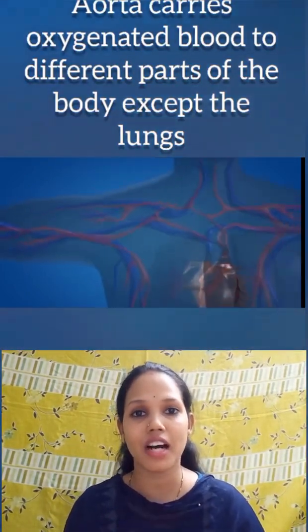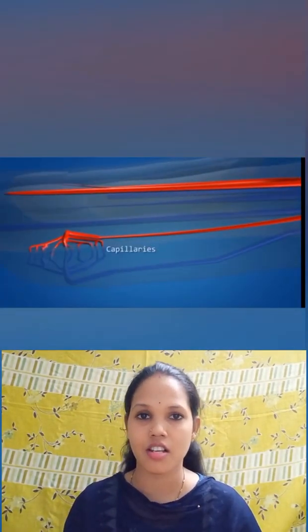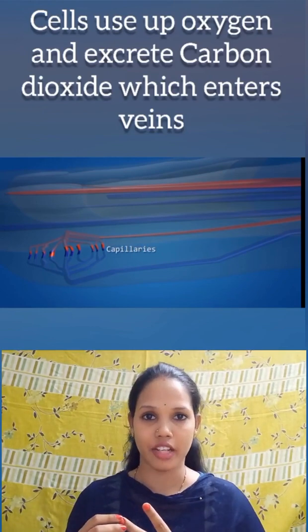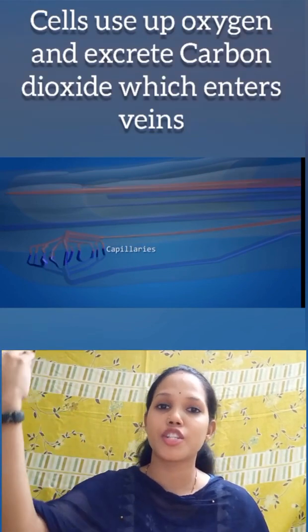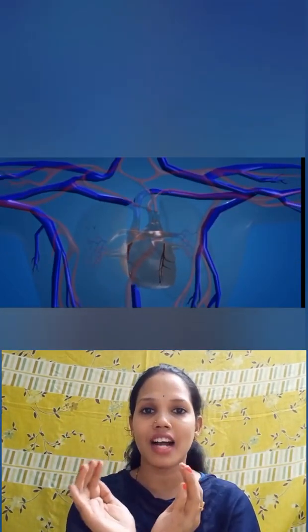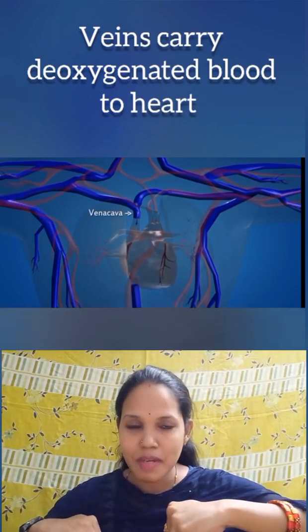The oxygen carried by the arteries is taken up by each and every cell, utilized for burning food, energy is produced, and carbon dioxide is given out as waste material. This carbon dioxide is collected by the veins. This gas exchange happens in the capillaries. The veins bring the deoxygenated blood back to the heart through two important vessels called the vena cavae. The superior vena cava brings deoxygenated blood from the upper parts of the body, and the inferior vena cava brings it from the lower parts, and both fill the right atrium with deoxygenated blood. This blood, by the opening of the tricuspid valve, enters into the right ventricle.